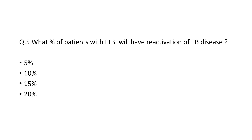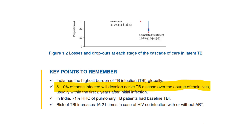Next question: what percentage of patients with LTBI (latent TB infection) will have reactivation of TB disease? This is a tricky question because in most guidelines the value is written as 5 to 10%, and somewhere it is written as 10% also. Going with 10% from the TPT guidelines, which states that 5 to 10% of those infected will develop active TB disease over the course of their lives.